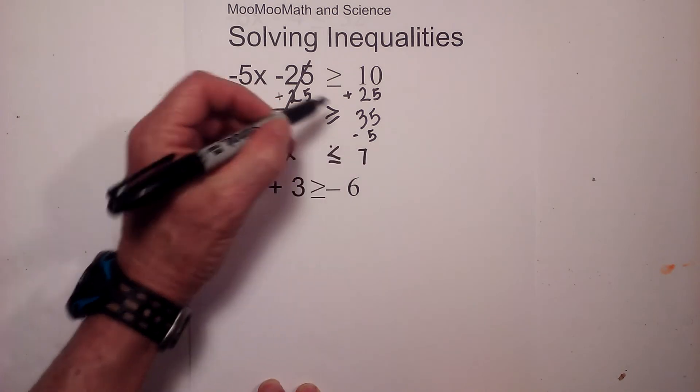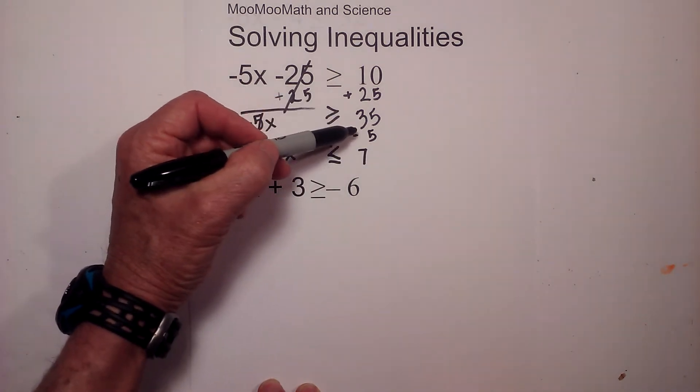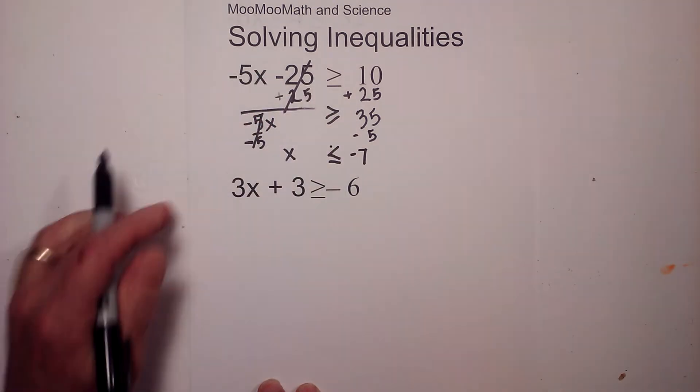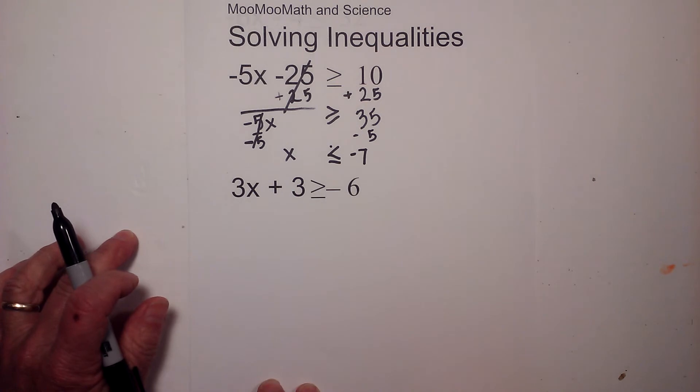The 5s cancel so the x comes down, and then 35 divided by 5 is 7. But is the 7 positive or negative? Well anytime you have a positive divided by negative or a negative divided by a positive, it becomes a negative number. So it will be x is less than or equal to negative 7.